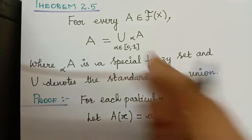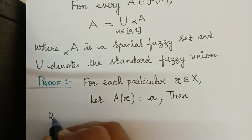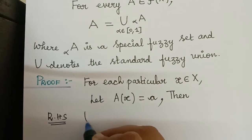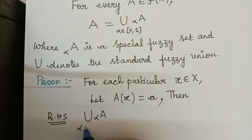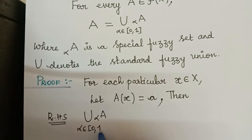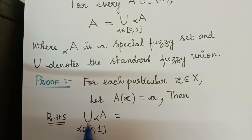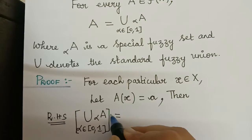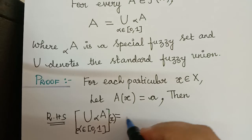Now we shall consider the right-hand side. The right-hand side is the union of αA for alpha an element of the closed interval [0,1]. We know that this is the standard fuzzy union, and by the definition of standard fuzzy union, if we take the union evaluated at element x, it will be equal to the maximum value — we can write this as supremum because there are many special fuzzy sets.